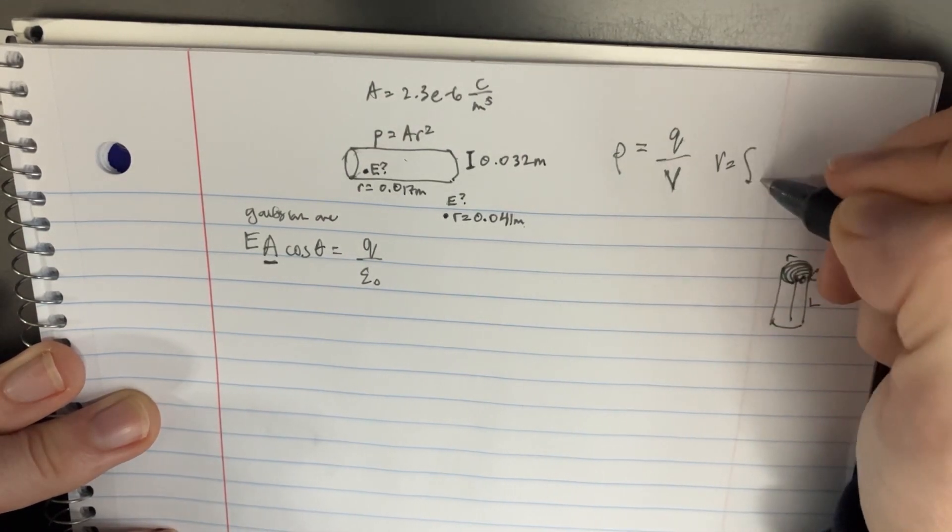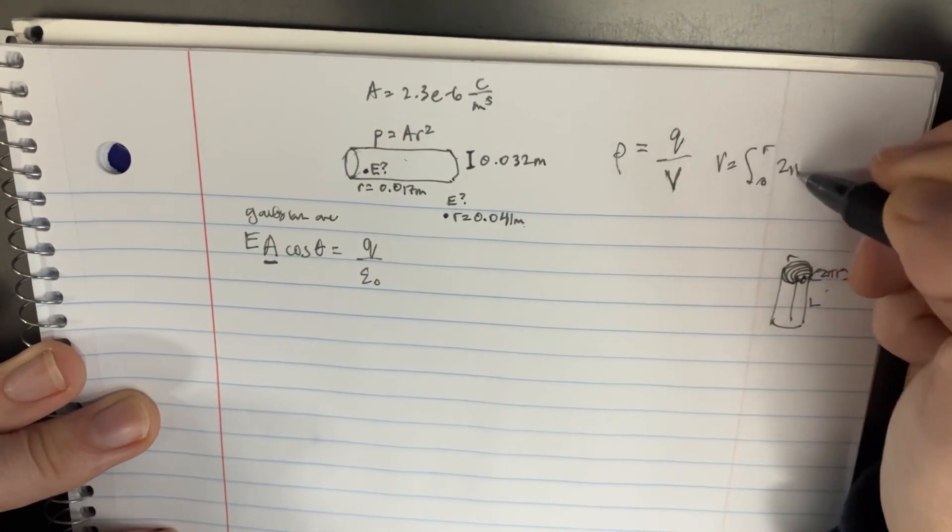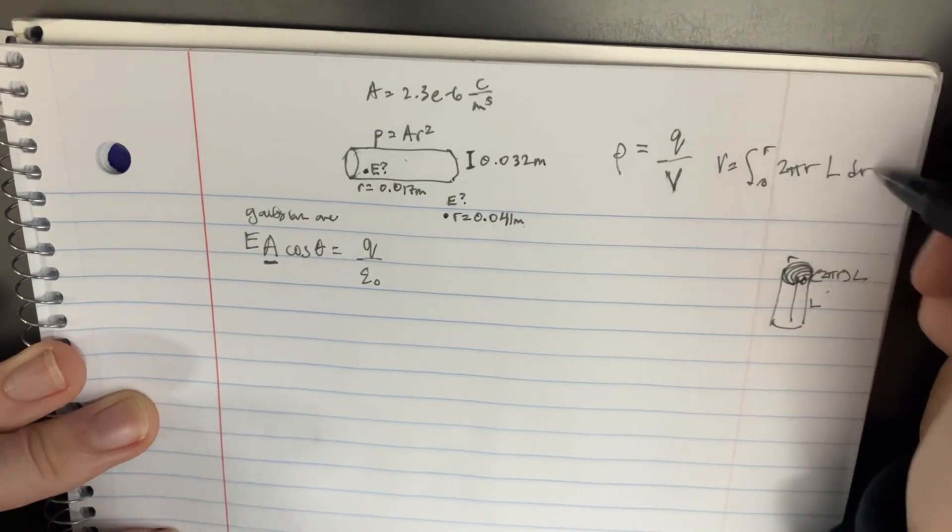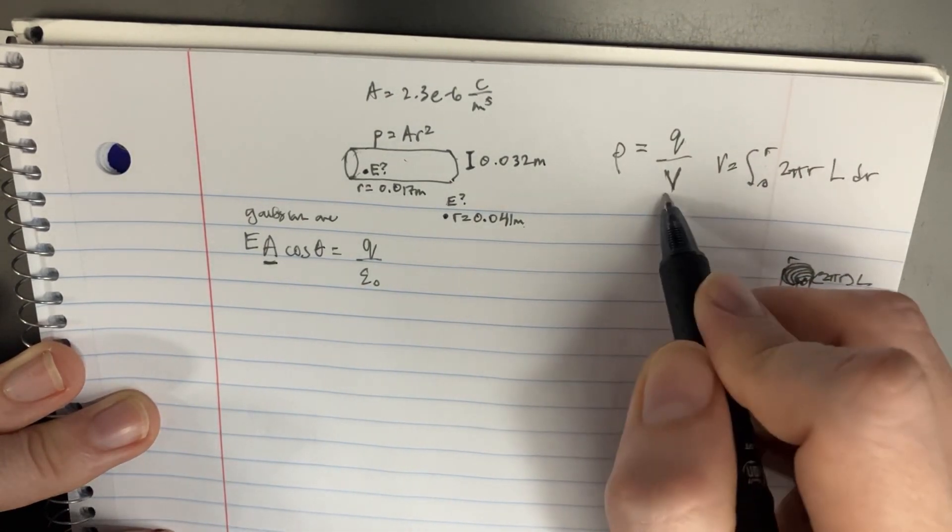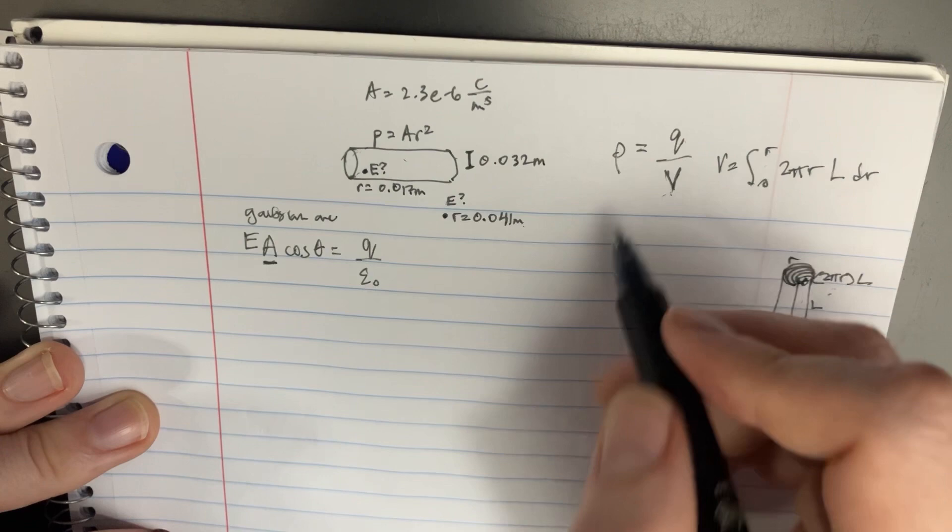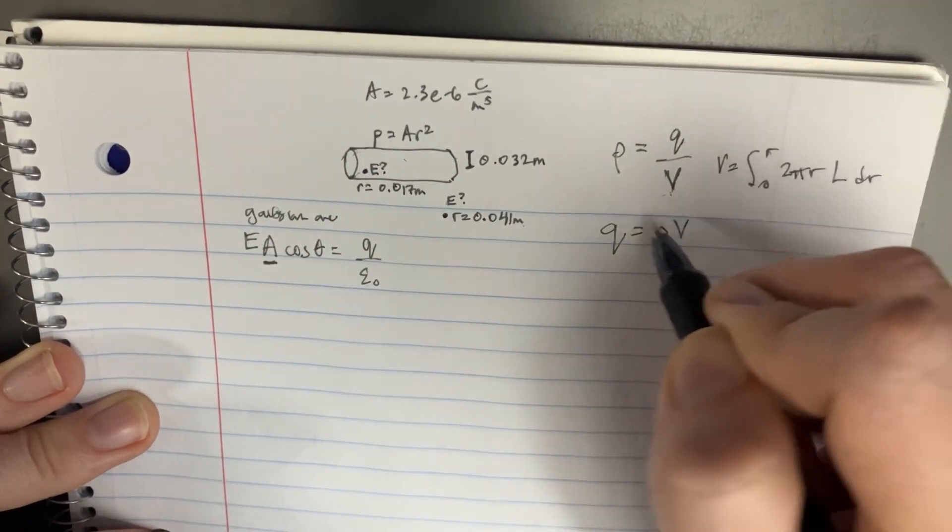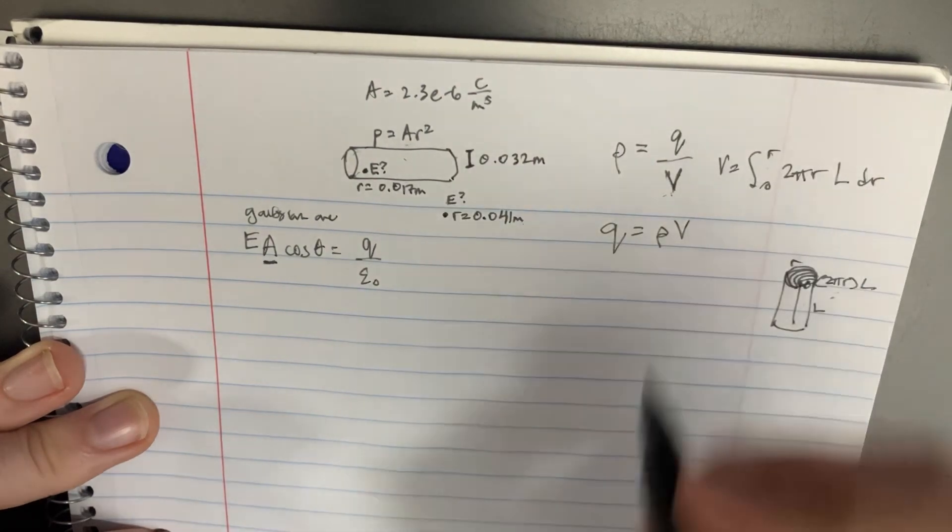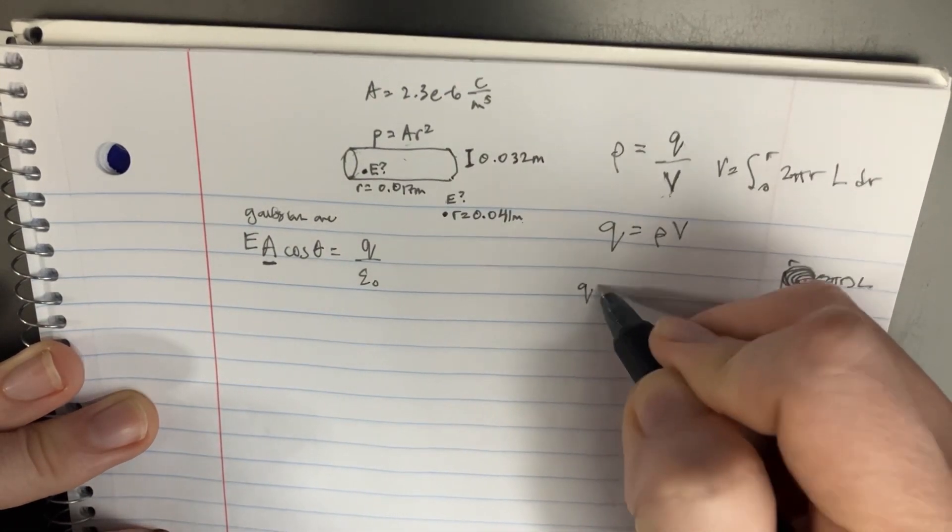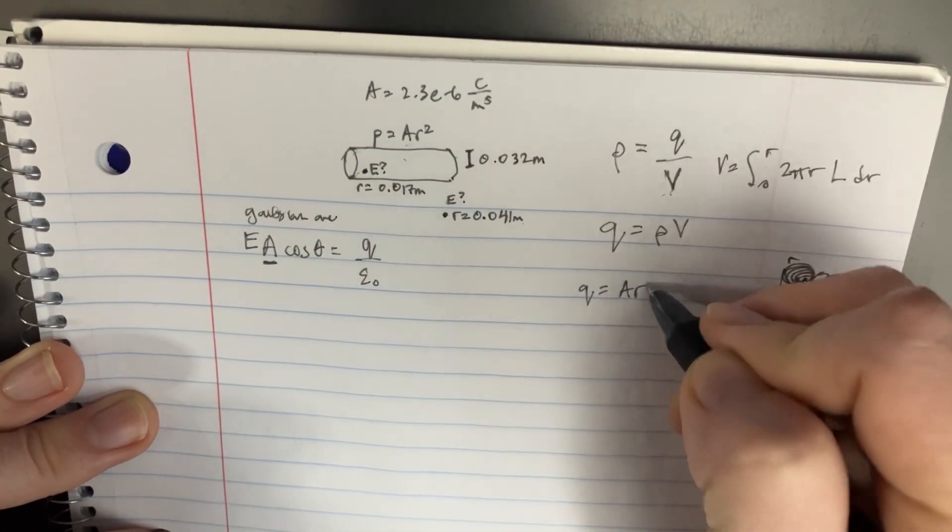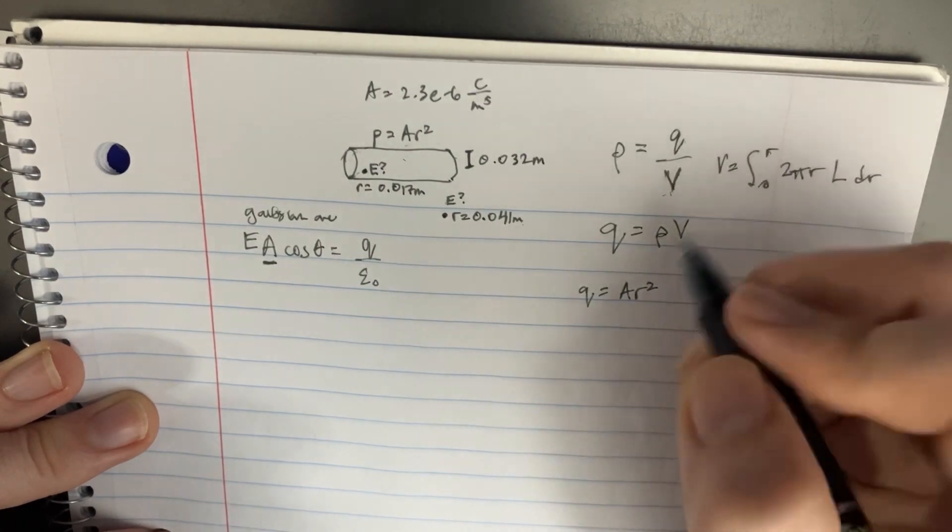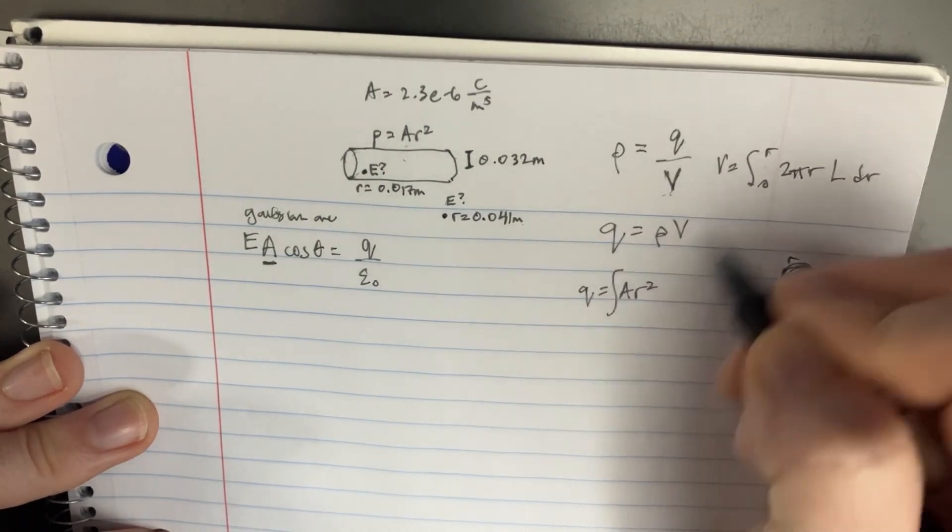So integrate from zero to radius 2πr L dr. And that's what we're going to use for the bottom. So we could say that Q equals ρV. We could substitute ρ in for that. And we'll get that Q is equal to Ar squared. And then there's going to be an integral on the volume.